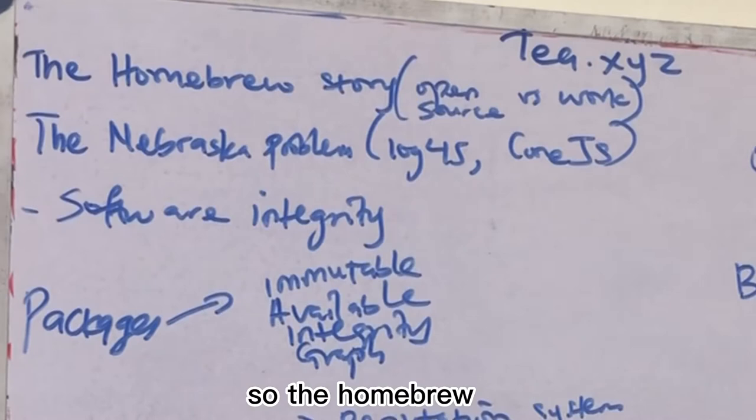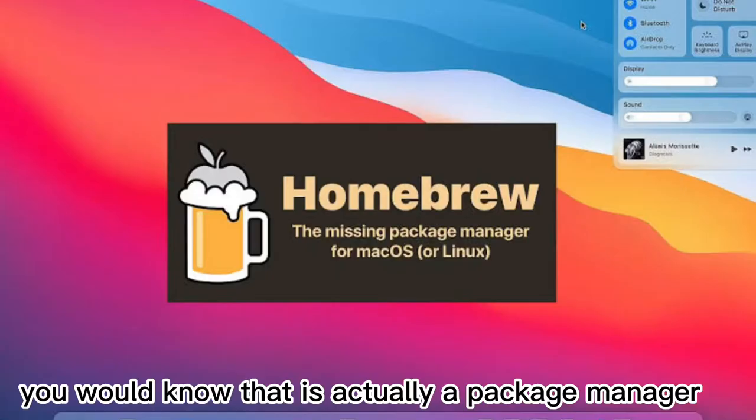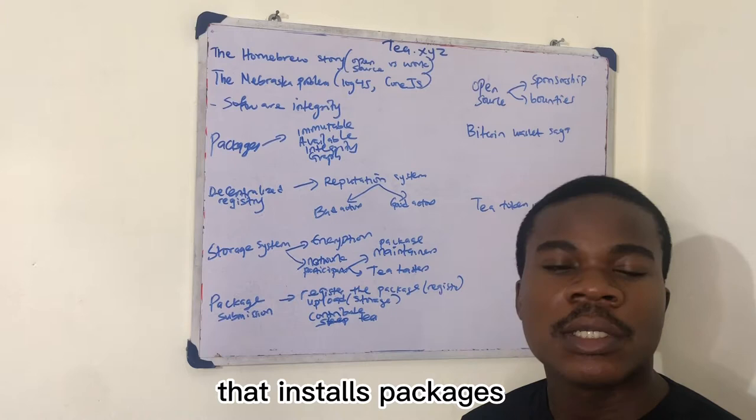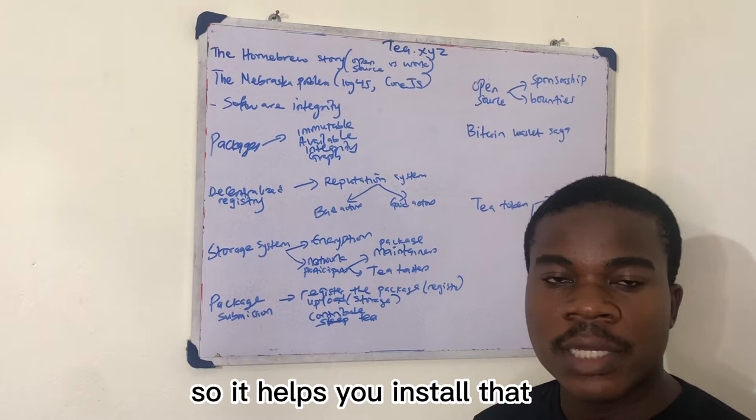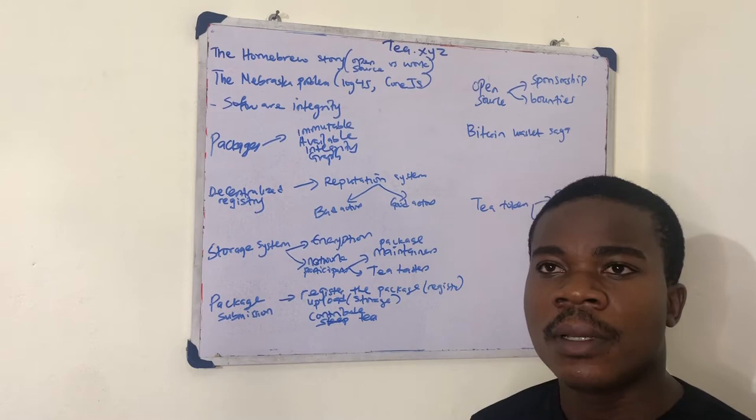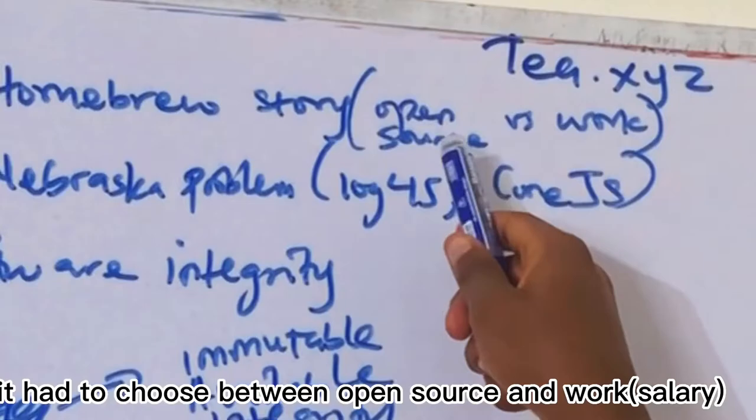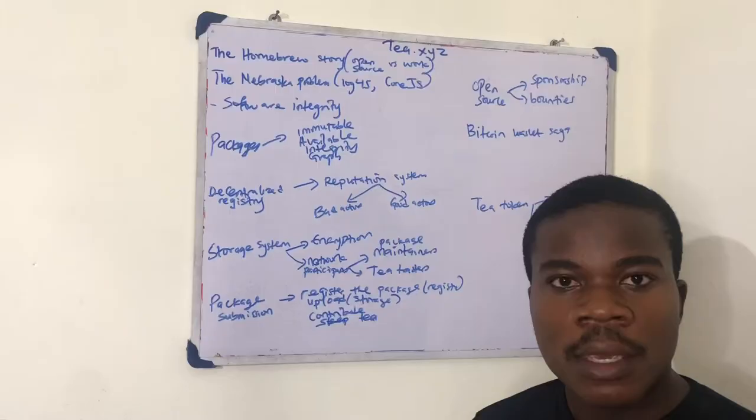So let's start with the homebrew story. If you're a developer, you will know that homebrew is actually a package manager that installs packages that didn't come with your Mac OS or Linux. It helps you install that and it's very popular, being downloaded by millions of people. But do you know the founder had to leave that project? He had to choose between open source and work.